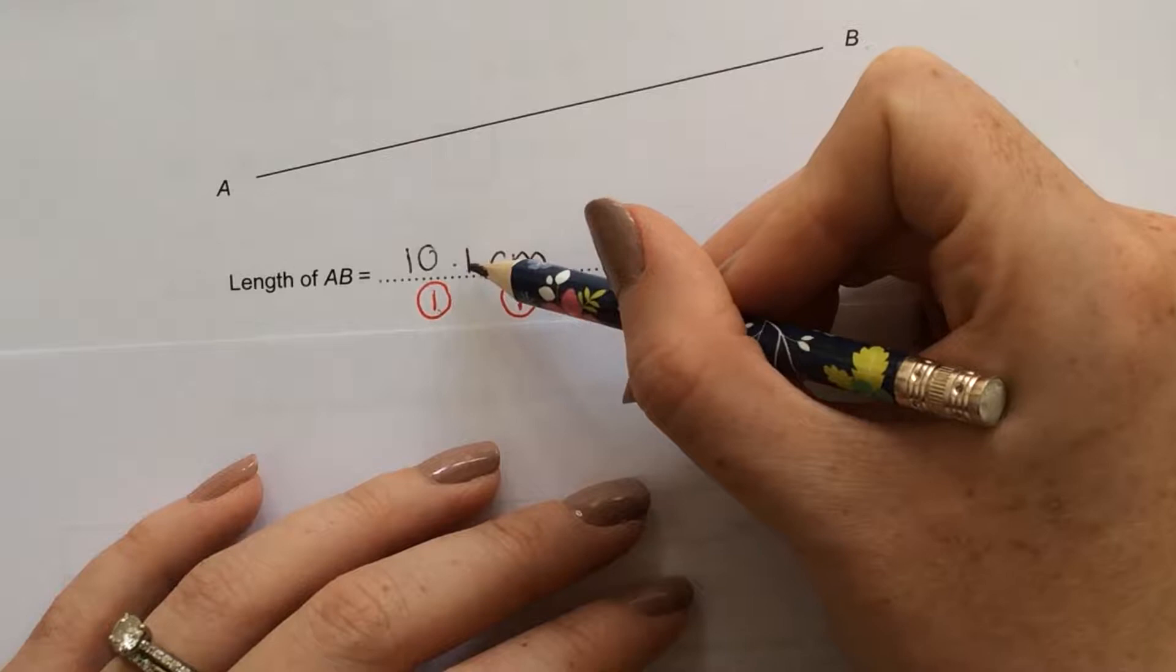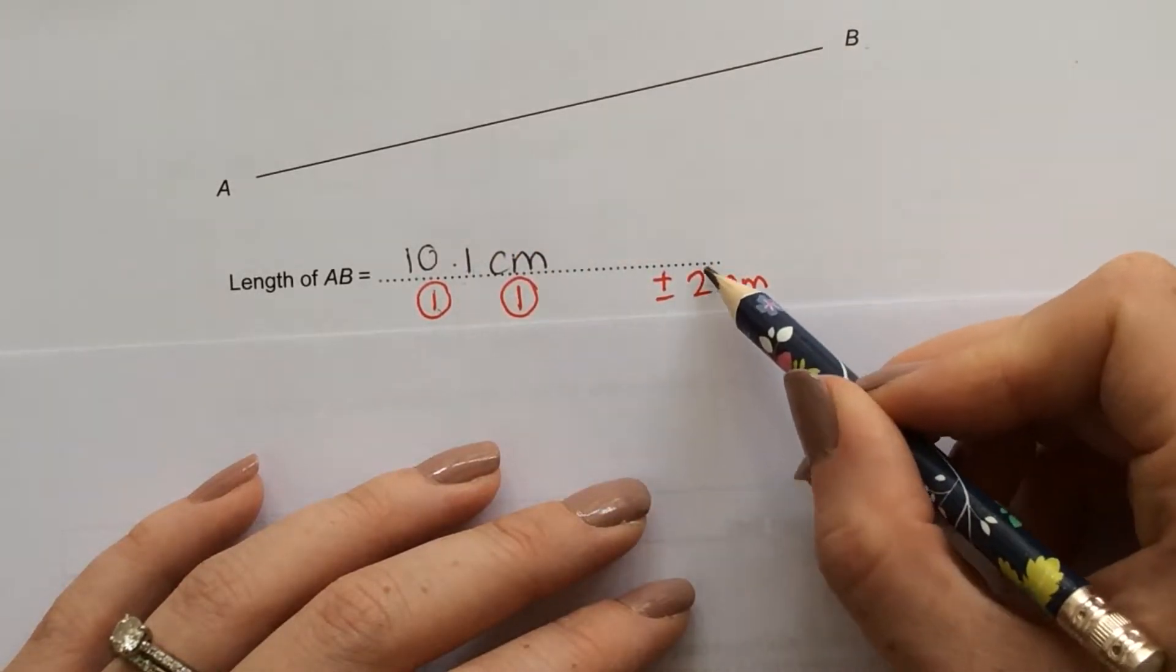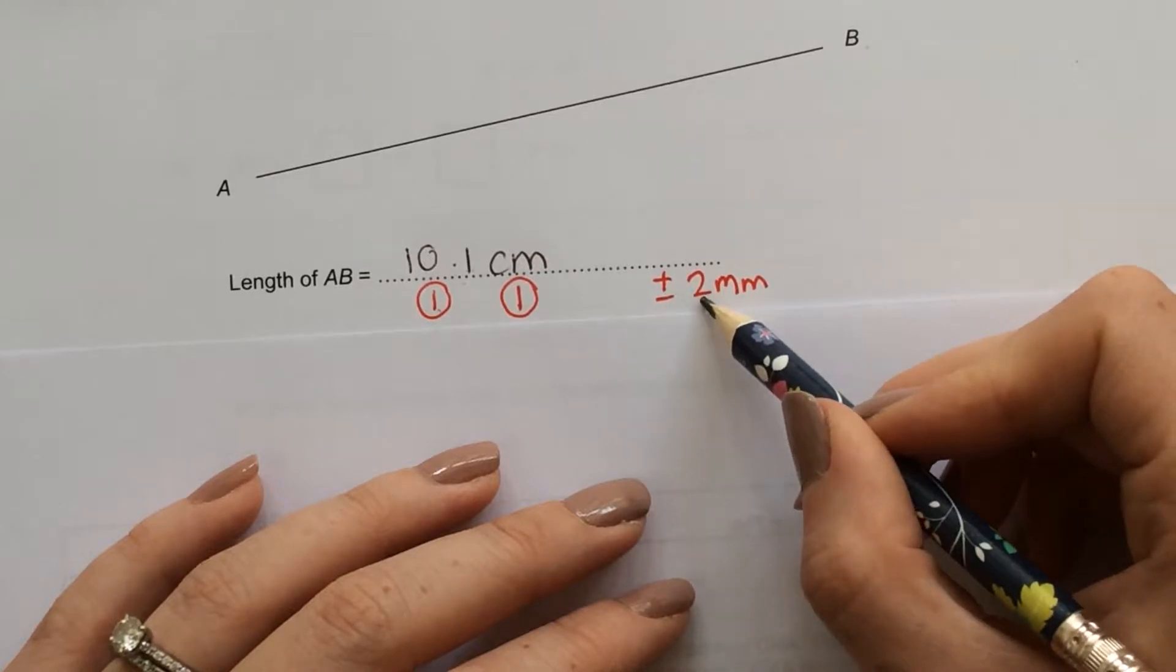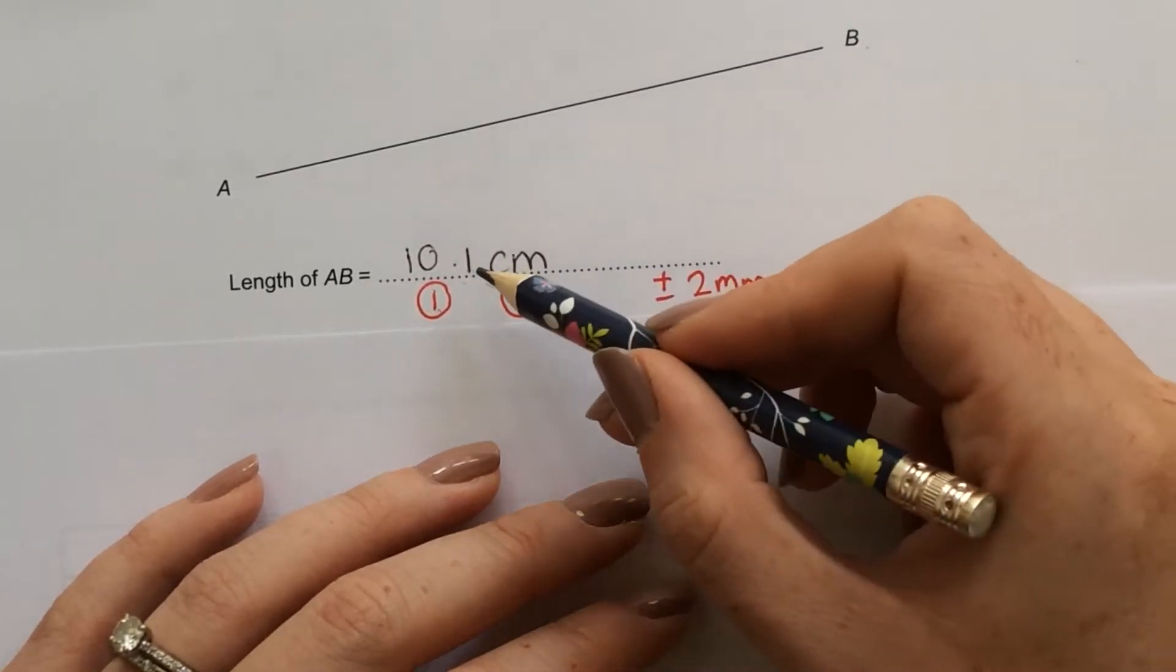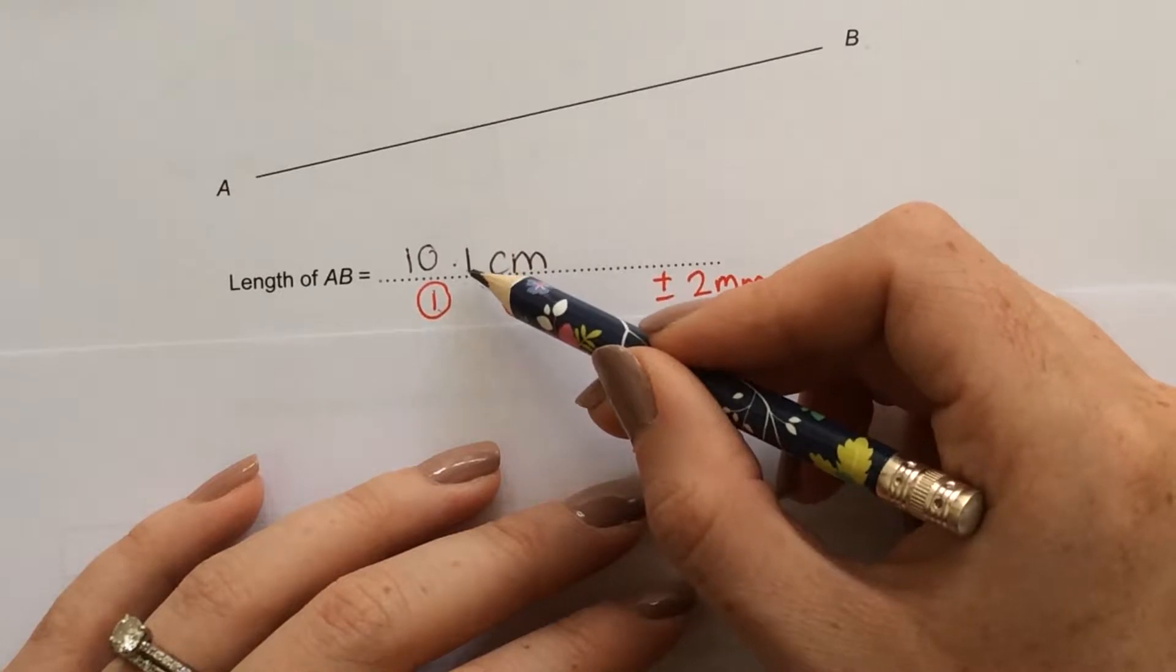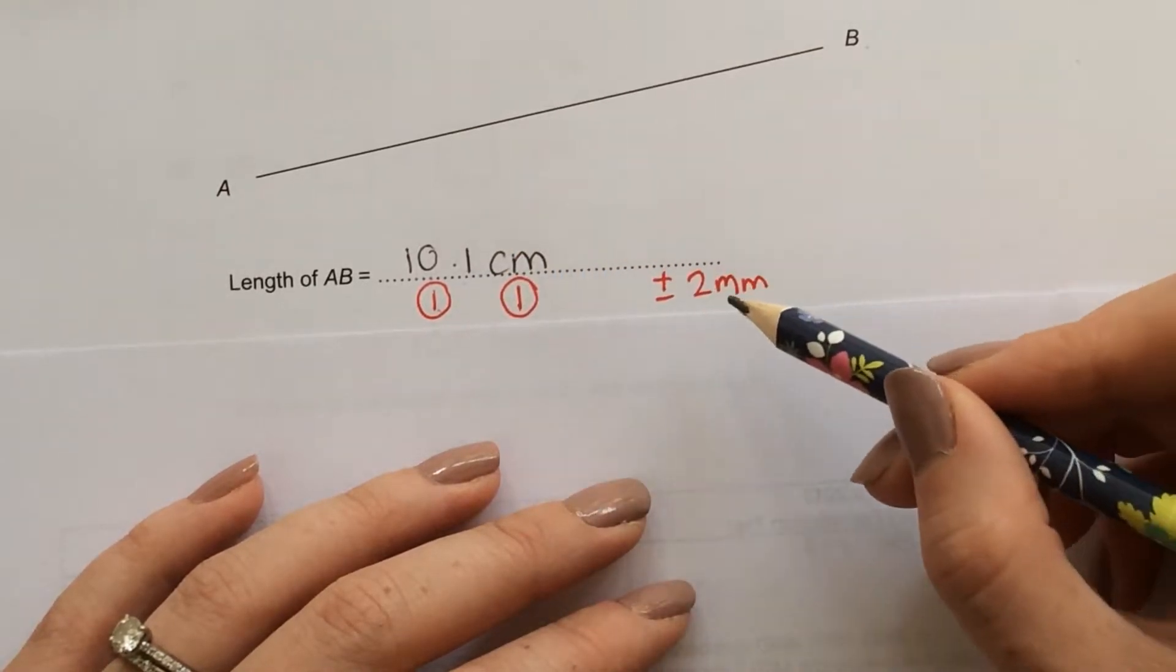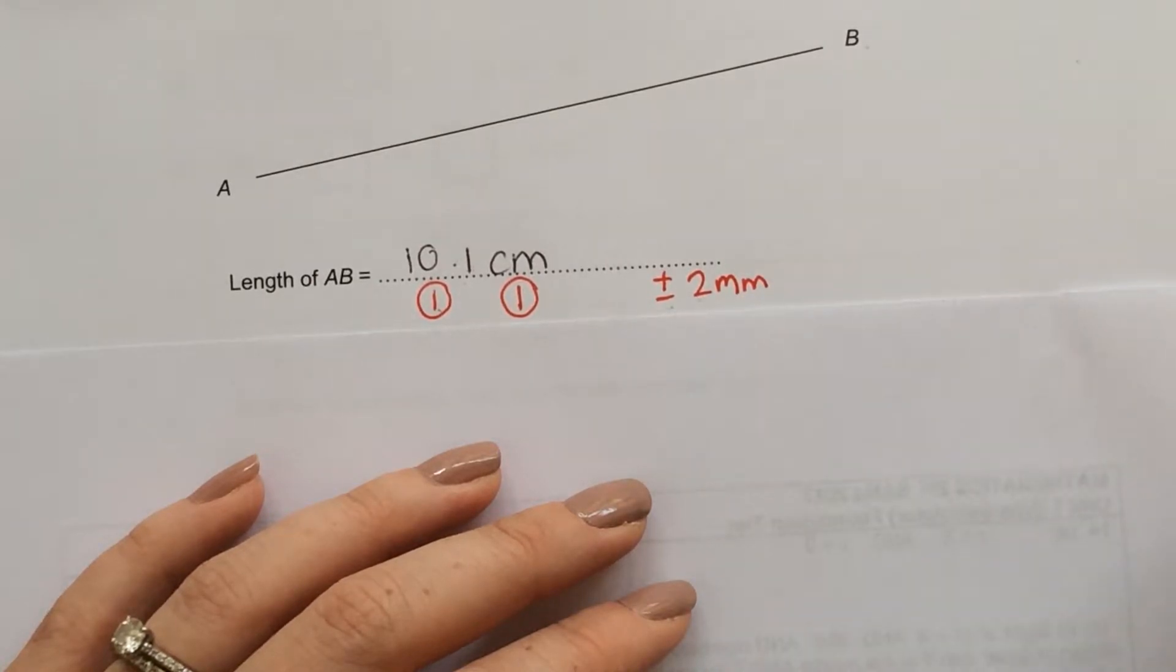If you measured your line and had 10.1, 10 centimetres, or 9.9 centimetres, then you'd also have it correct because they allow you minus 2 millimetres as well.